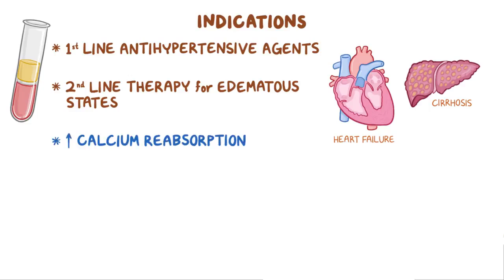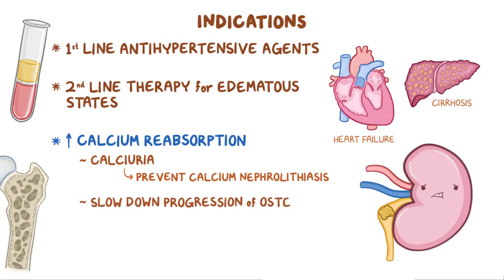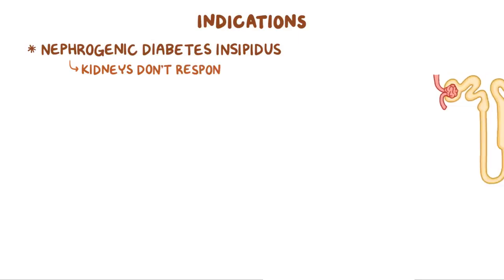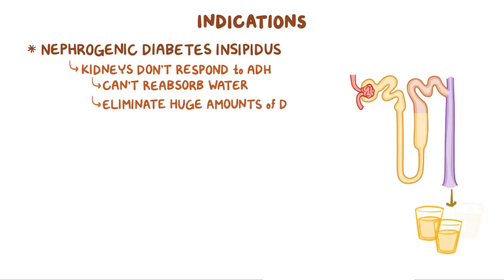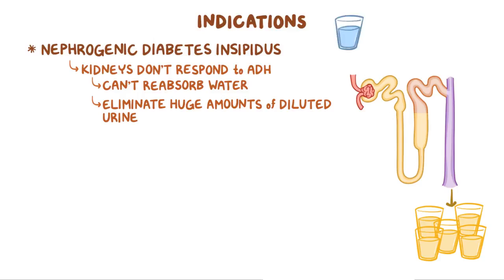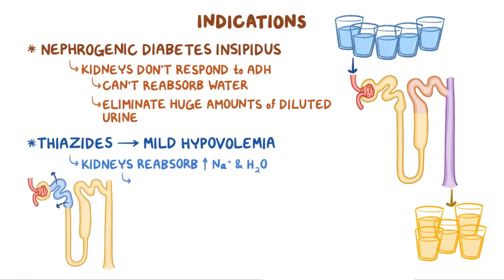Since they increase calcium reabsorption, they can also be used in individuals with calciuria to prevent calcium nephrolithiasis, or the formation of calcium oxalate kidney stones. Preventing calcium loss can also slow down the progression of osteoporosis. An interesting indication is nephrogenic diabetes insipidus, where the kidneys don't respond to ADH so they can't reabsorb water in the distal convoluted tubule and collecting duct, eliminating huge amounts of dilute urine daily. Thiazides induce a mild hypovolemia, making the kidneys reabsorb more sodium and water in the proximal convoluted tubule. With less fluid reaching the distal convoluted tubule, fluid balance is maintained.